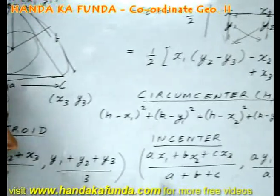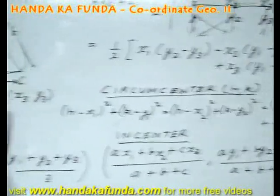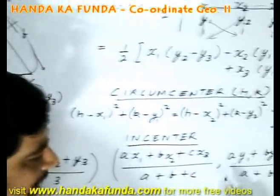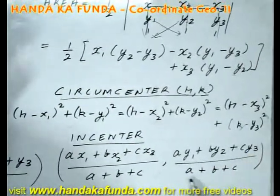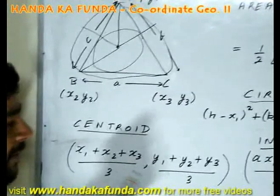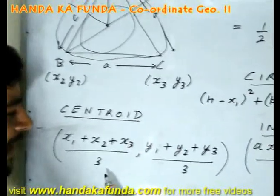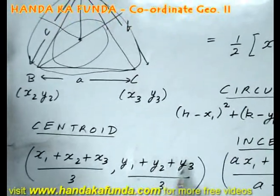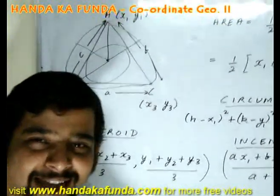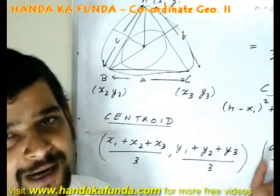Where a, b, c are the lengths of the sides and x1y1, x2y2, x3y3 are the coordinates. Similarly for the y coordinate: a·y1 plus b·y2 plus c·y3 divided by a plus b plus c. The centroid, or the point of intersection of the medians, is probably the simplest to find out. That is x1 plus x2 plus x3 by 3 for the x-coordinate and y1 plus y2 plus y3 by 3 for the y-coordinate. If you are lucky and your triangle is equilateral, all three centers will be the same point and you can determine them with any of the formulas.